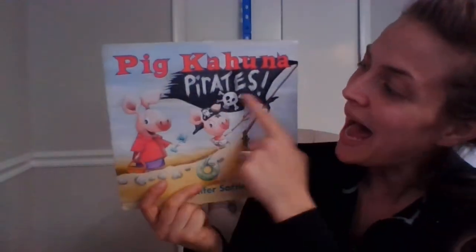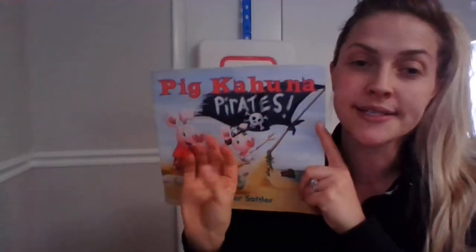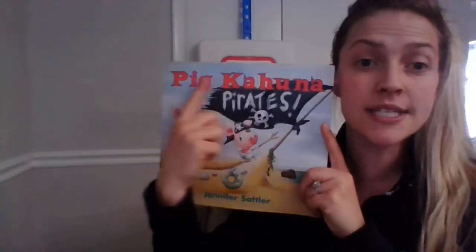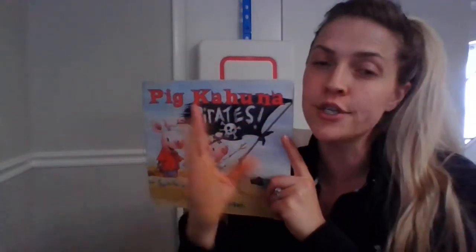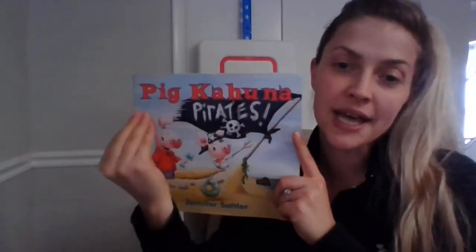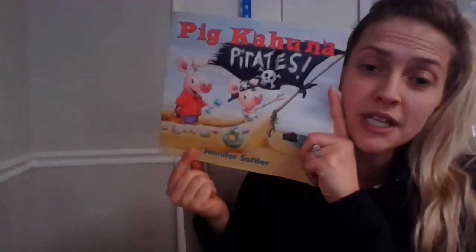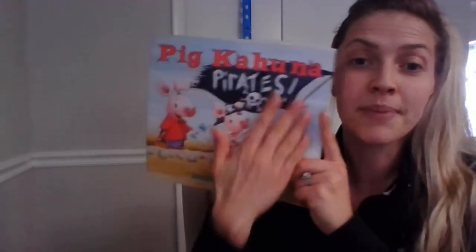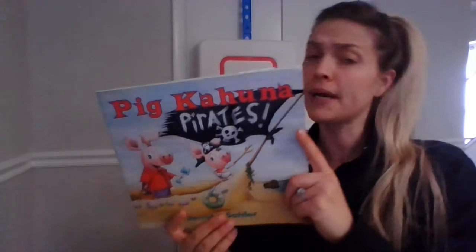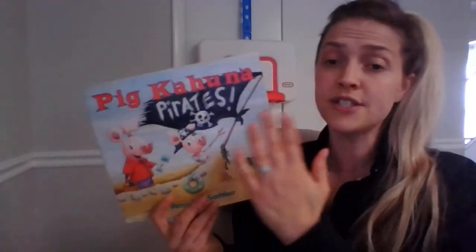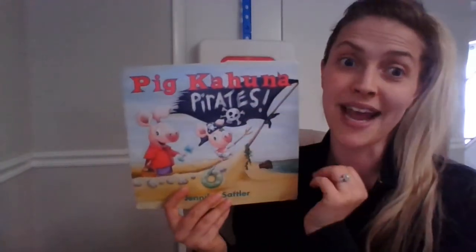Pig Kahuna Pirates. Remember that our front cover of our book usually has three or four things. We usually have our title, usually at the top or in big letters. The big letters are our title: Pig Kahuna Pirates. Then usually we have a cover picture, and the cover picture usually has some kind of idea or context for what the story will be about.